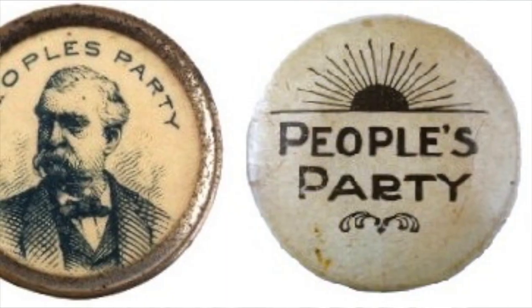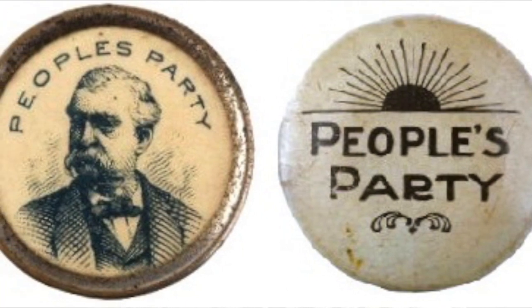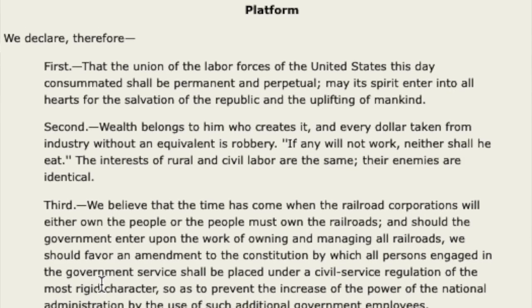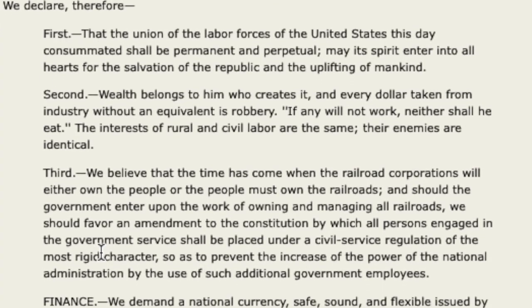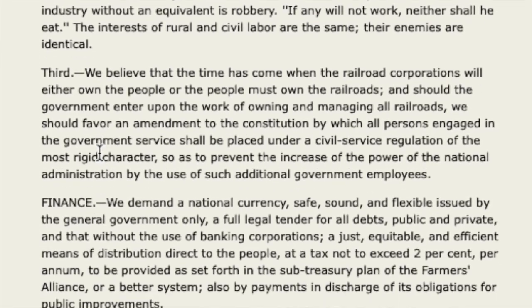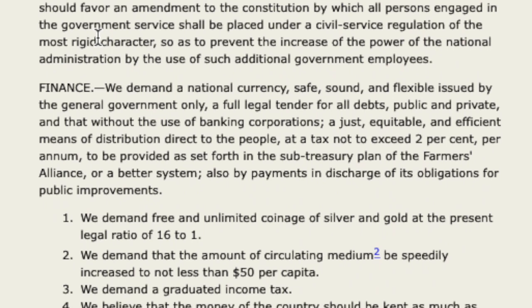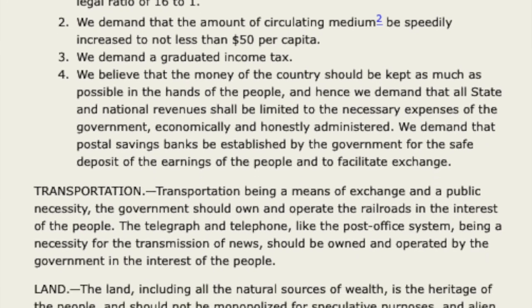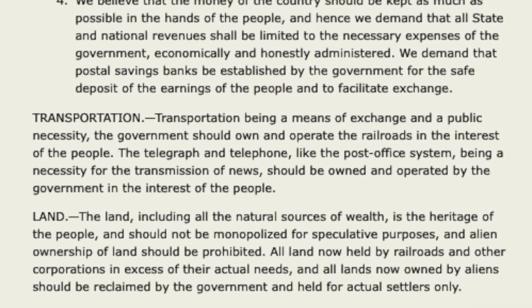All of these groups eventually formed an alliance and came together to form their own political party — a third party, the Populist Party. The Populist Party had a new economic platform that rejected free market capitalism and the big corporations, most notably the rail corporations and technology corporations like the phone and telegraph companies. AT&T, which we still have today, got its start in 1885.